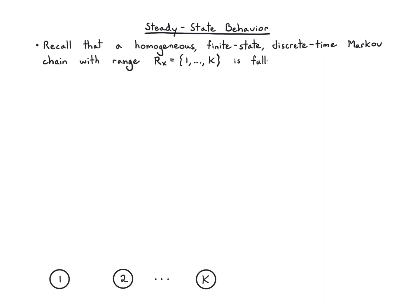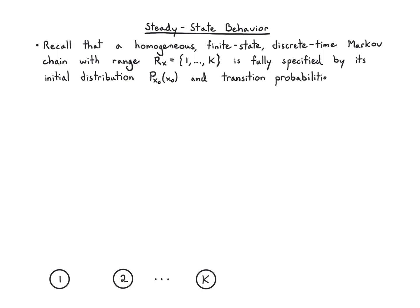We fully specify a Markov chain with an initial distribution — that's the probability of where we are at time 0 — and transition probabilities, which we write as p_jk for j and k from 1 to K. We draw these in the diagram below.